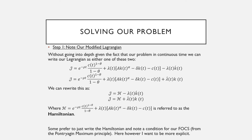So like before, we're going to note our modified Lagrangian. Now this isn't a critical step, but it's a way to think about problems because we want to get those good first order conditions. We can rewrite this modified Lagrangian as follows, where we have j, which is the name of the Lagrangian, equal to script H minus λ(t) times k-dot, which is our law of motion.